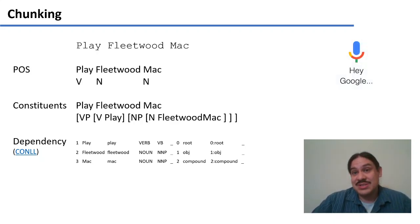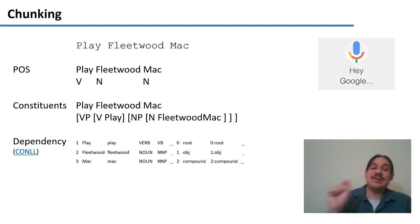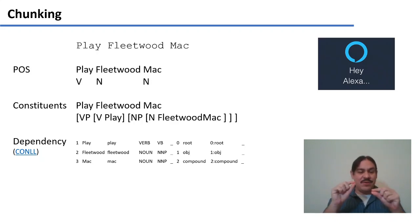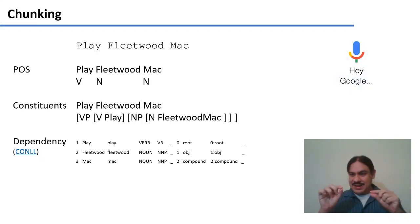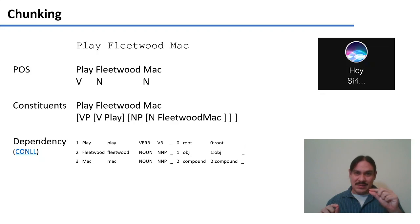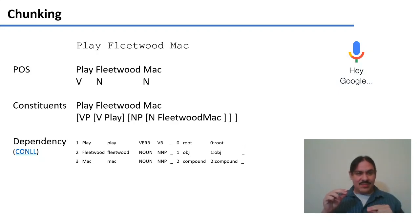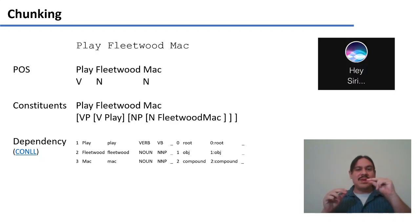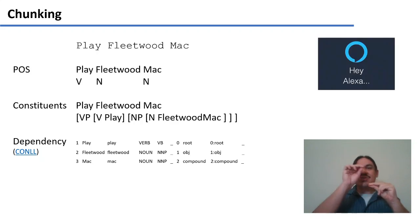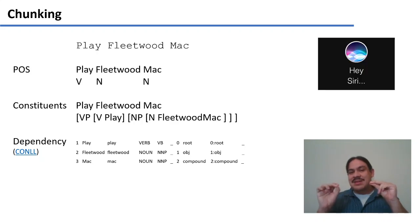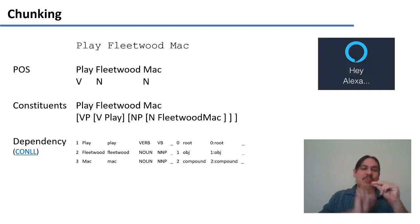We could have a constituency parsing, so that when you get 'play Fleetwood Mac', you could construct a VP which has a verb, play, and then a noun phrase, Fleetwood Mac. With a constituency parsing, you could ask the computer: what is the action? It's in the verb, play. And who are you performing play on? On the sister of V — NP — Fleetwood Mac.